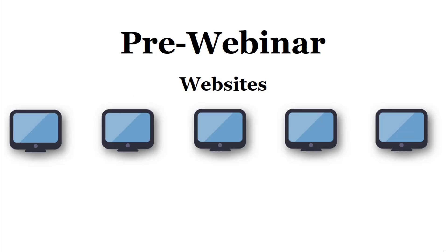The next pre-webinar element to worry about is websites. This might vary depending on your situation — this is just how I have mine set up. The five websites I need are: first, a landing page. This is where people who click on my ad go to get details about the webinar and decide whether or not they want to sign up and be a part of it.